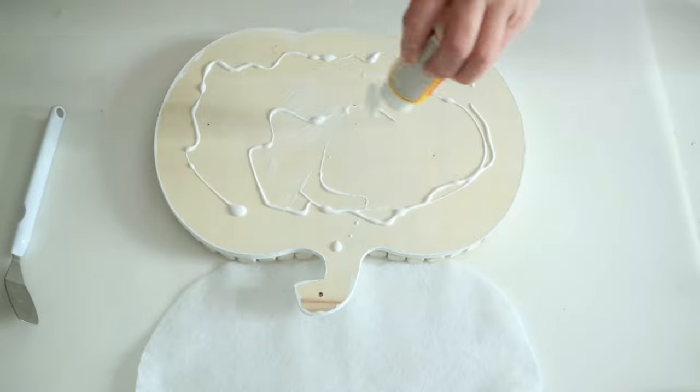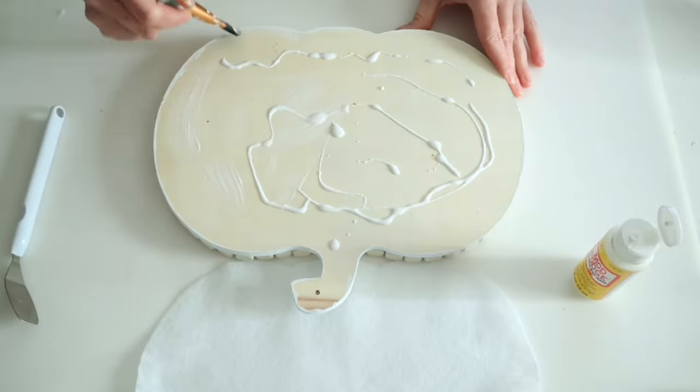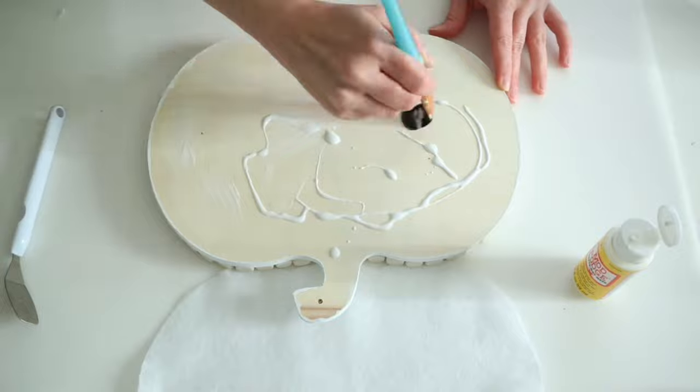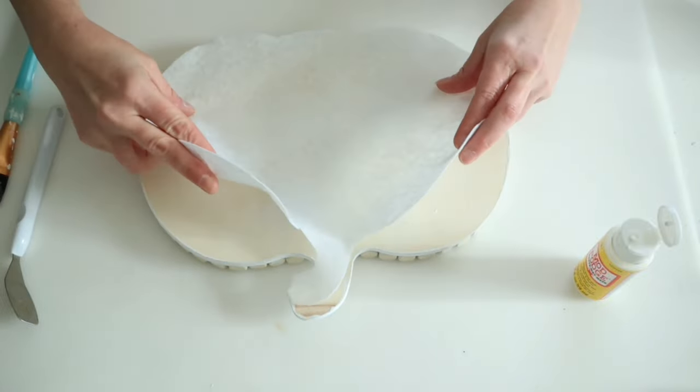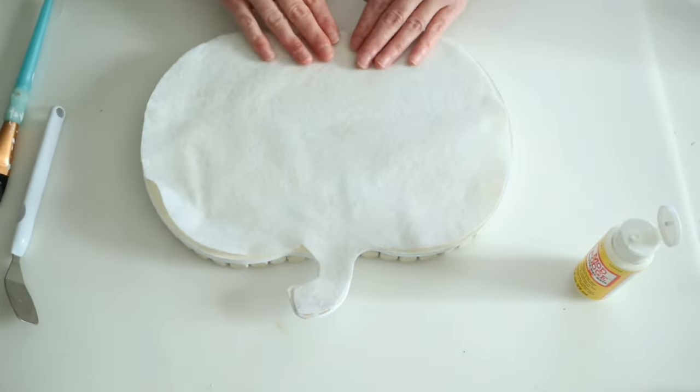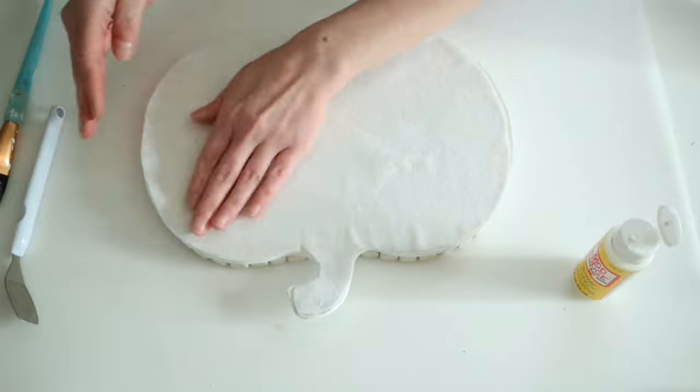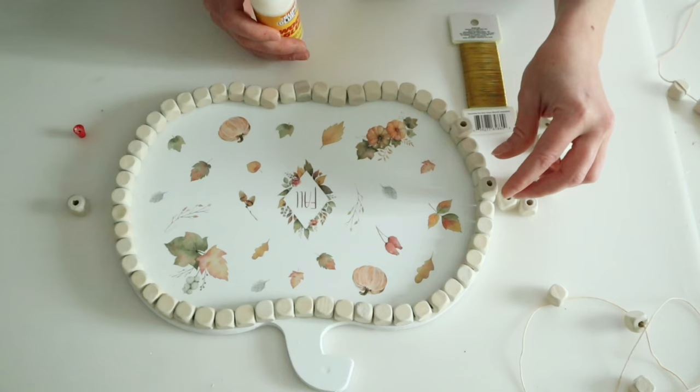Now this is also totally optional, but I did go ahead and use some Dollar Tree felt to add to the back of this because I didn't want it to scratch my little bookshelf that I've had it sitting on. And so I just used some Mod Podge to attach this to the bottom.